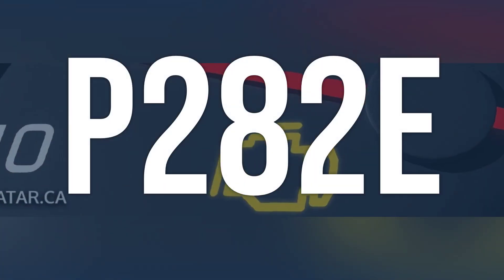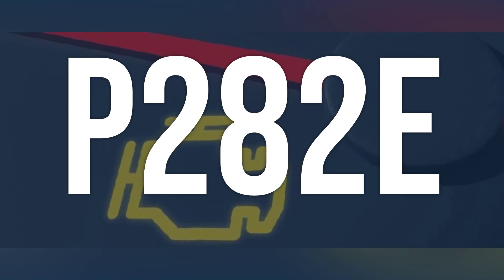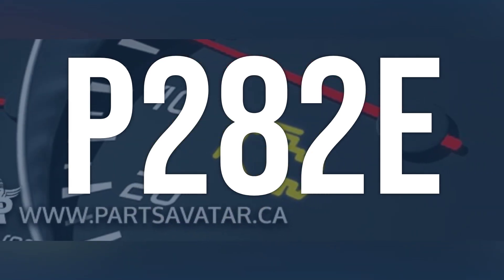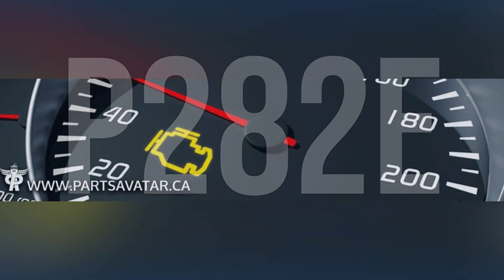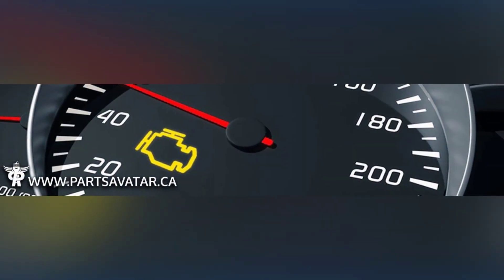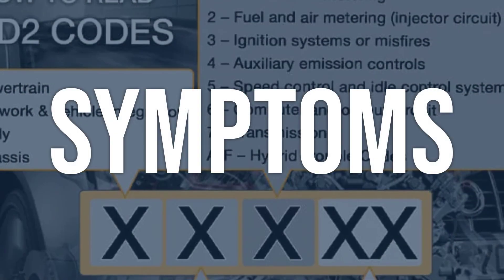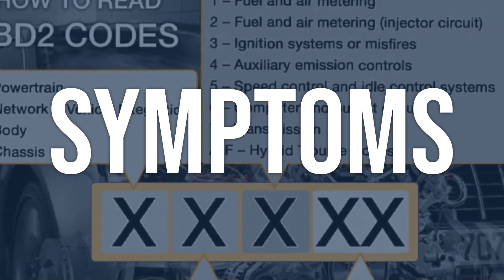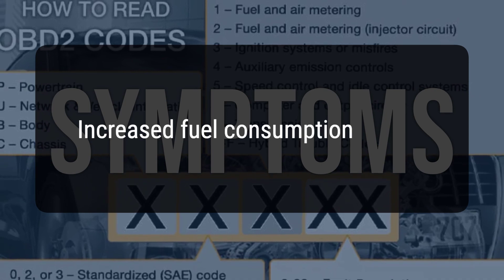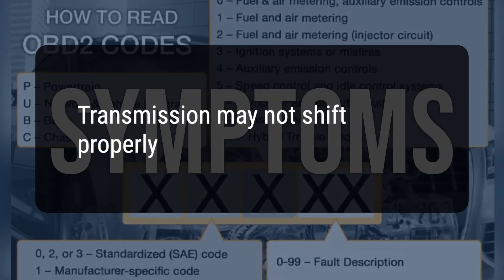OBD2 code P282E means that the pressure control solenoid K control circuit is not performing as desired, which can cause the transmission to not shift properly. When you encounter this OBD error, the vehicle typically exhibits the following symptoms: 1. Increased fuel consumption. 2. Transmission may not shift properly.